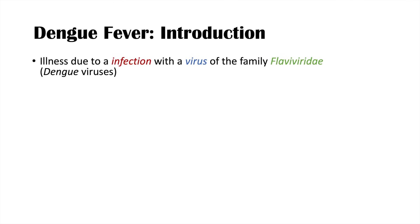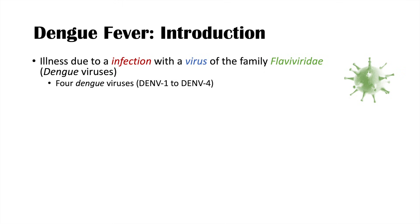Dengue fever is an illness due to an infection with a virus of the family Flaviviridae. There are a subset of Flaviviridae viruses known as the dengue viruses. There are actually four dengue viruses, named DENV1 to DENV4. They are all enveloped viruses — we'll talk about why this is important later — and they're all positive single-stranded RNA viruses.